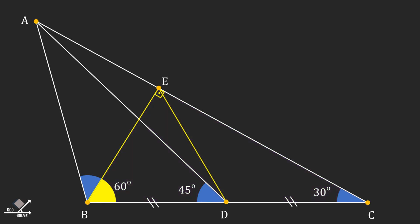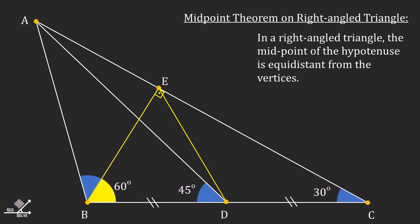Then let's connect point E to point D. Recall that in a right-angled triangle, the midpoint of the hypotenuse is equidistant from the vertices. So line segment ED will be equal to line segment BD and line segment DC.